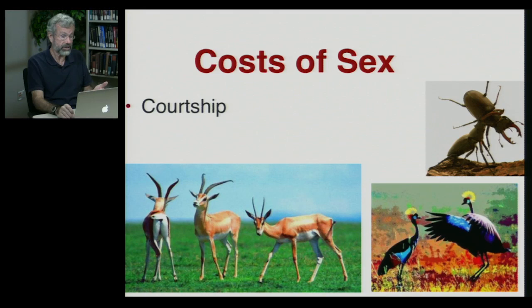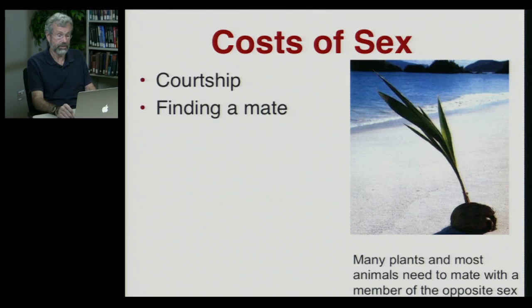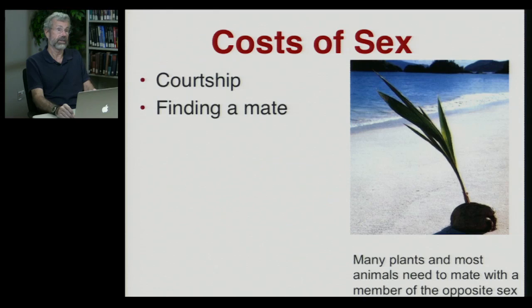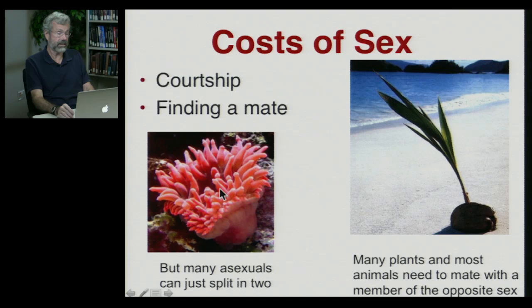Another problem is, if you can only reproduce with a partner, you may have problems finding a mate. Let's say you're a coconut that's washed up on shore — you've found a nice place to live, but you're the only coconut on the island, and there's nobody to exchange your pollen with. So you're stuck. Plants often need a partner; most animals need a partner. Now, there are advantages to not having sex. If you're asexual, you can do it all by yourself. You can form your gametes through mitosis, without having to have pollen or an egg from somebody else. And also, a lot of asexuals simply split in two, like the sea anemone — it grows and grows, reaches a certain size, and now there's two. They don't need sex in order to reproduce.